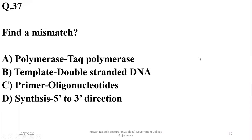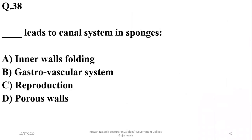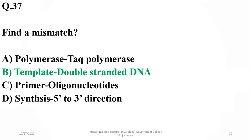Question 36: In PCR, Taq polymerase is the polymerase enzyme used. The primer is an oligonucleotide of about 10 to 20 nucleotides. DNA synthesis always runs in the 5' to 3' direction. The template used is single-strand DNA in most cases rather than double-strand DNA; if it doesn't convert to single-strand DNA, it won't serve as a template. Beta is the best option.